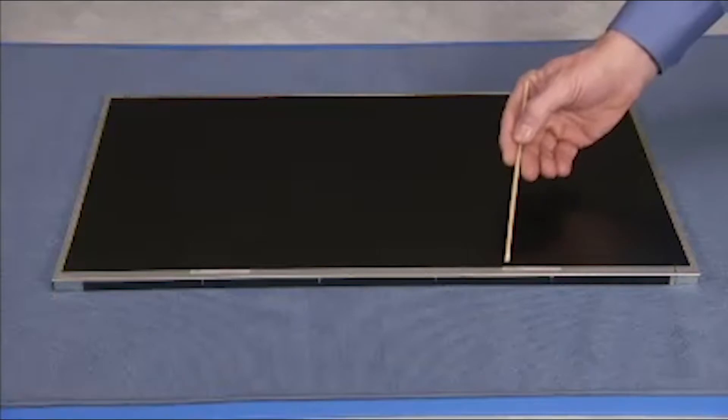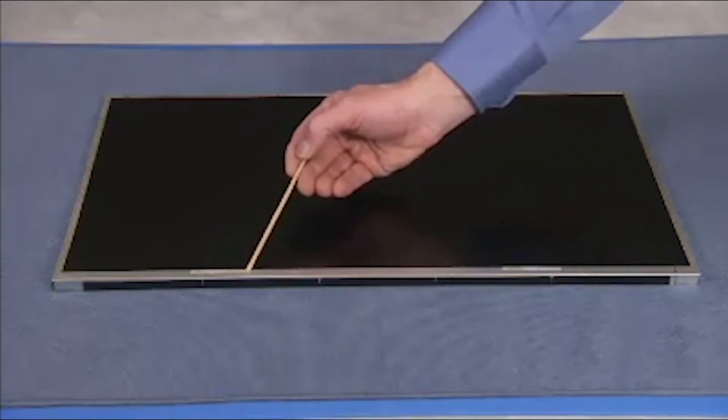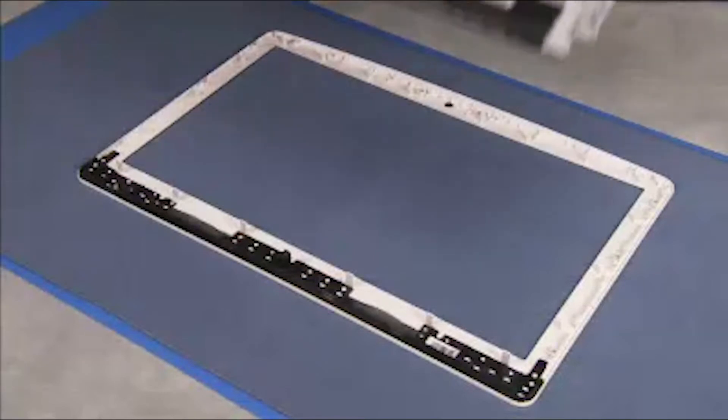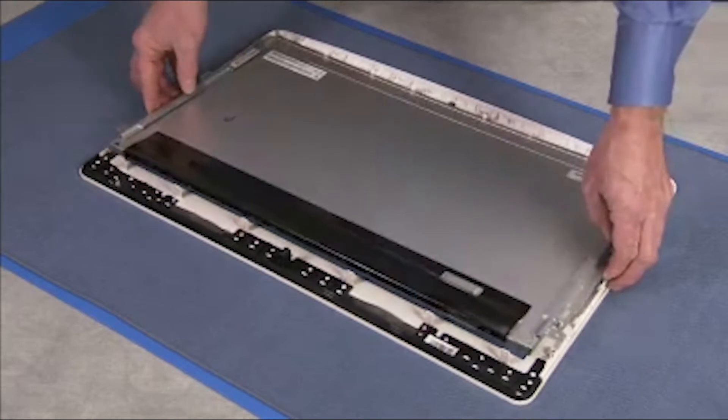Make sure there is double-sided tape placed on the edges of the panel. Place the panel face down onto the bezel, aligning the holes on the panel with the pegs on the front bezel.